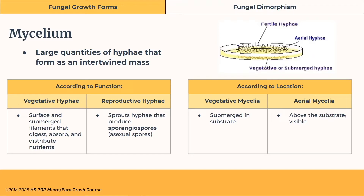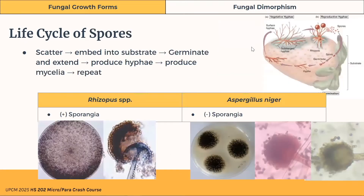The reproductive hyphae at the top produce sporangiospores or asexual spores. Speaking of spores, in their life cycle: spores scatter, embed into a substrate such as agar, then germinate and extend, produce hyphae which grow into mycelia, which will then house the spores, and then the spores are released and scatter again — and the cycle repeats.